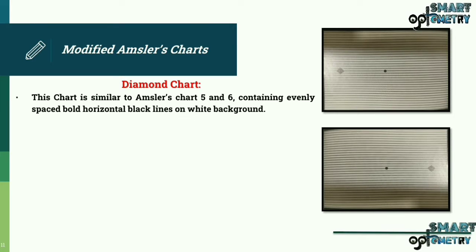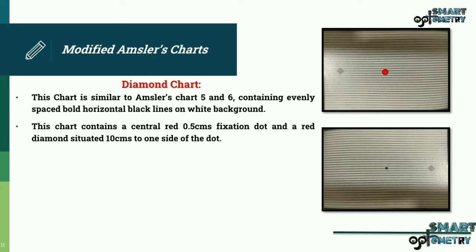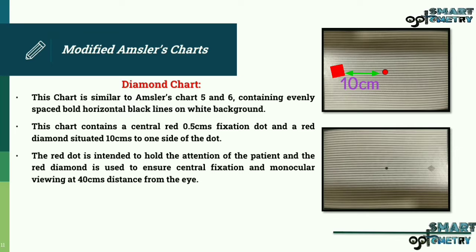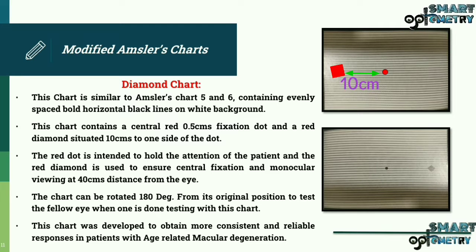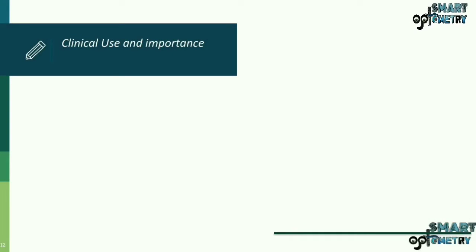Another example of modified Amsler's chart is the diamond chart. This chart is similar to Amsler's chart 5 and 6, containing evenly spaced bold horizontal black lines on white background. This chart contains a central red 0.5 cm fixation dot and a red diamond situated 10 cm to one side of the dot. The red dot is intended to hold the attention of the patient, and the red diamond is used to ensure central fixation and monocular viewing at 40 cm distance from the eye. The chart can be rotated 180 degrees from its original position to test the fellow eye when one eye is done testing with this chart. This chart was developed to obtain more consistent and reliable responses in patients with age-related macular degeneration. Here you can see the Amsler's chart having the evenly spaced bold horizontal black lines on a white background.